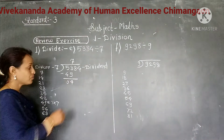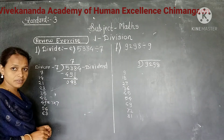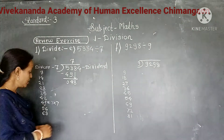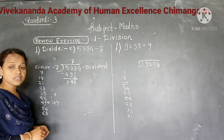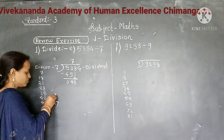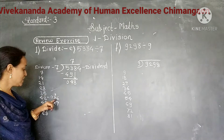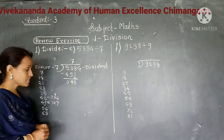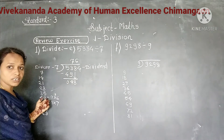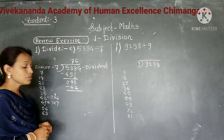Next digit 8, we bring down to make 48. Now we divide 48 by 7. But 48 is not in the multiplication table of 7. So less than 48 is 42, which comes in the 6th place of the multiplication table of 7. By dividing 48 by 7, it gives 6 as a quotient. Write 6 as a quotient and write product 42 below 48. Subtract, it gives 6.